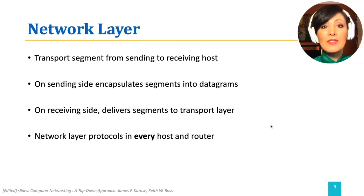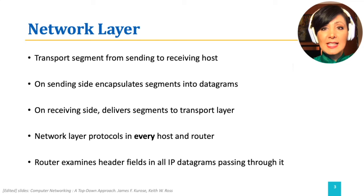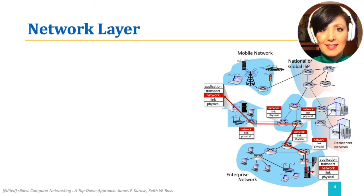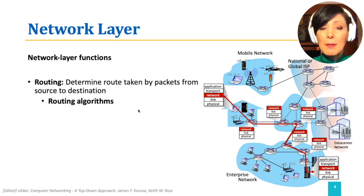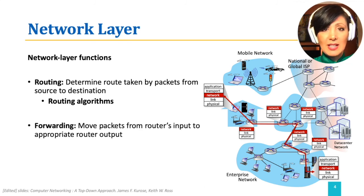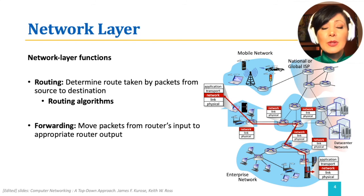Routers in the core of the network examine the header fields in the datagrams when they pass through. The two main functions of the network layer, which drive the core of packet-switched networks, are routing and forwarding. Routing determines the routes taken by packets from the source to the destination. Forwarding, based on the information decided during routing, moves packets from a router's input to the appropriate router output.